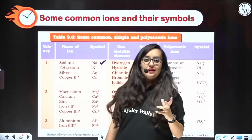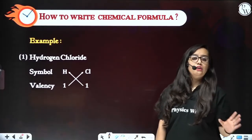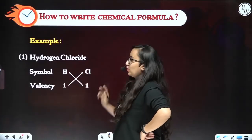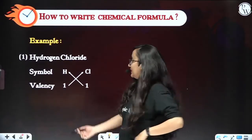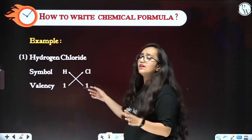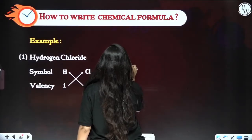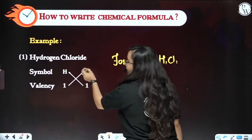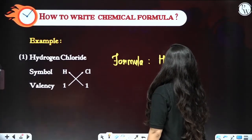Now let us do some real examples. First: hydrogen chloride. There are two elements — hydrogen and chloride. We write their valencies: hydrogen is plus 1, chloride is minus 1. We cross-multiply: the formula becomes H¹Cl¹, or simply HCl. Nothing written means one by default, so the formula is HCl.